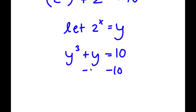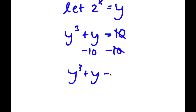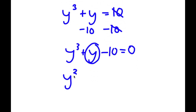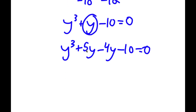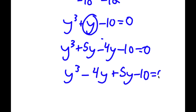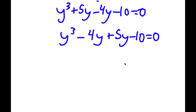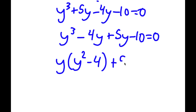If I subtract 10 on both sides, I get y to the power of 3 plus y minus 10 is equal to 0. I can rewrite y as 5y minus 4y. So now I have y to the power of 3 minus 4y plus 5y minus 10 is equal to 0. From y to the power of 3 minus 4y, I'm going to factor out y, giving y times y squared minus 4. And from 5y minus 10, I'm going to factor out 5, giving 5 times y minus 2, all equal to 0.